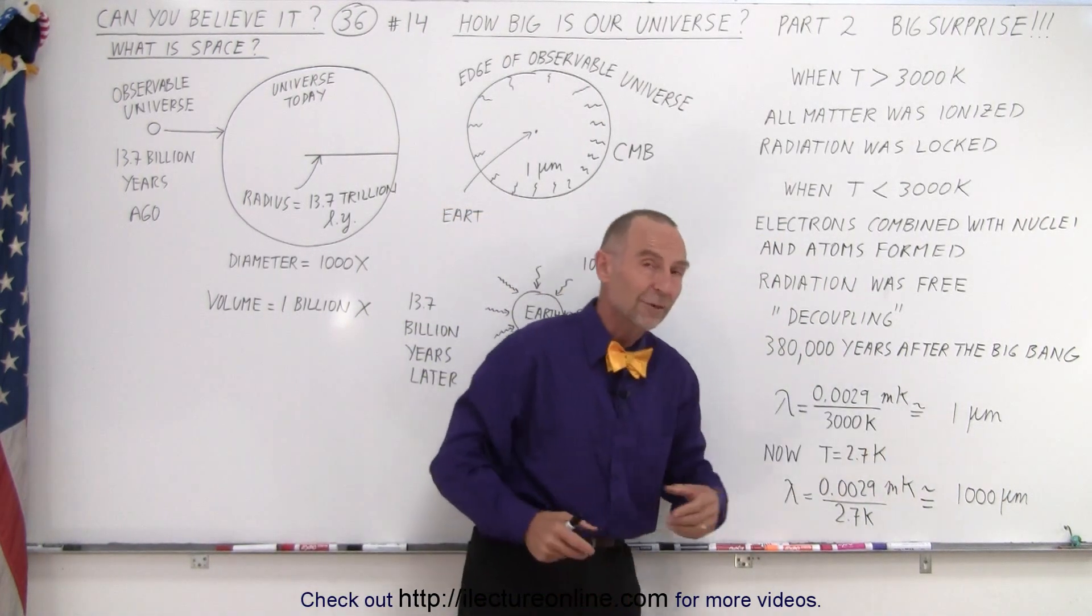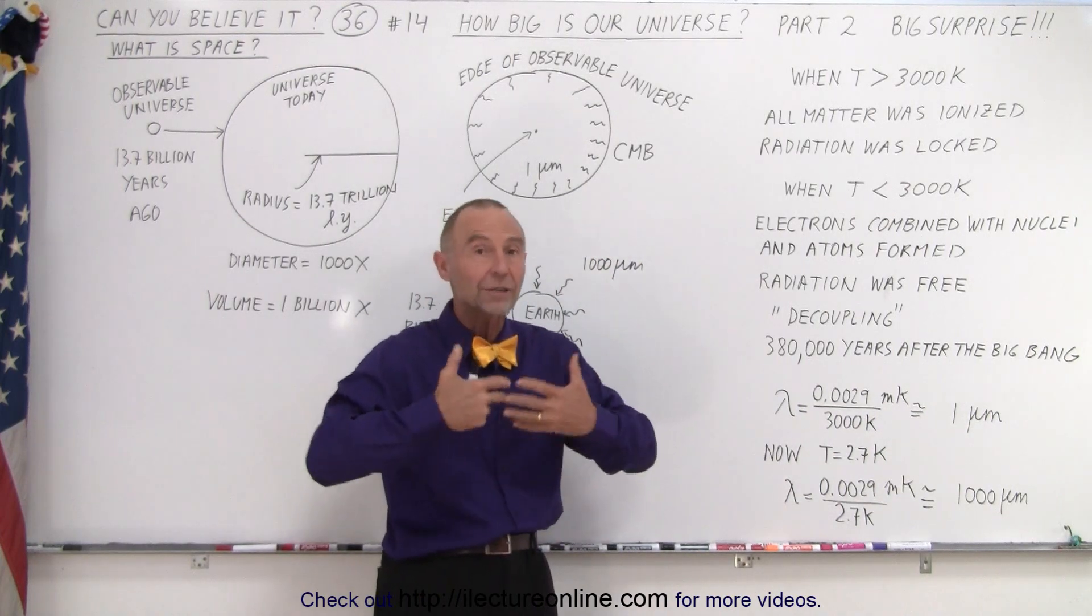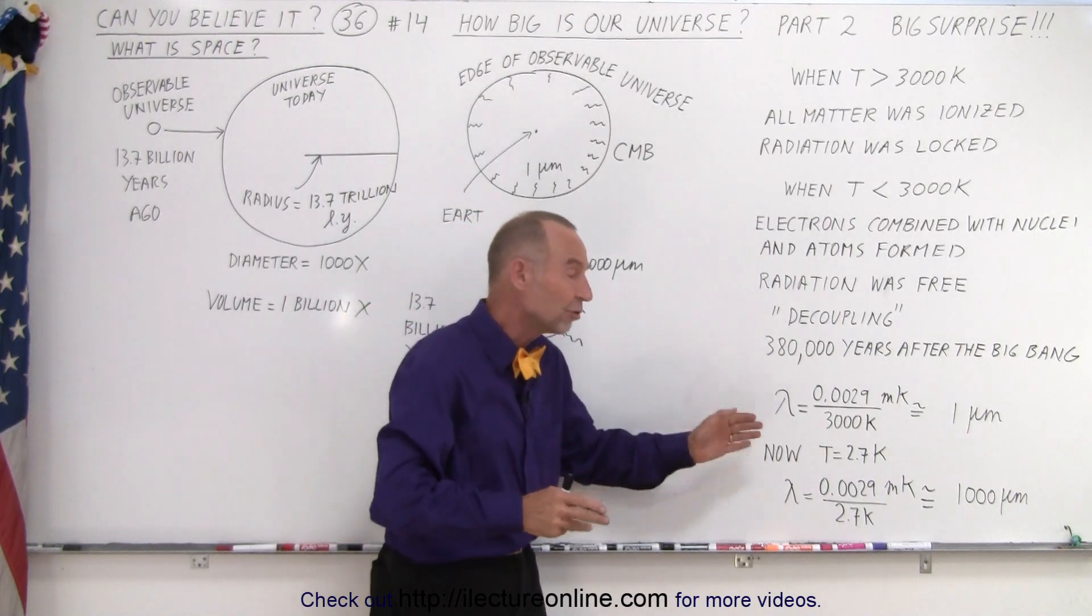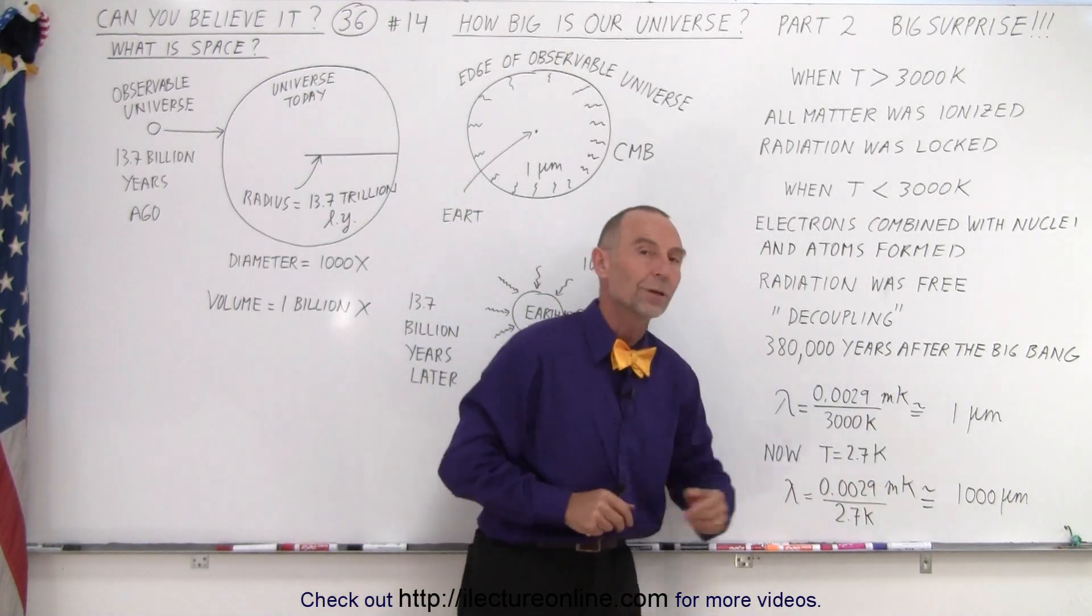We come out with a wavelength of about one micrometer, a thousand nanometers, which is well into the infrared range. And so the entire universe was filled with radiation of about the exact same wavelength and frequency, about one micrometer.